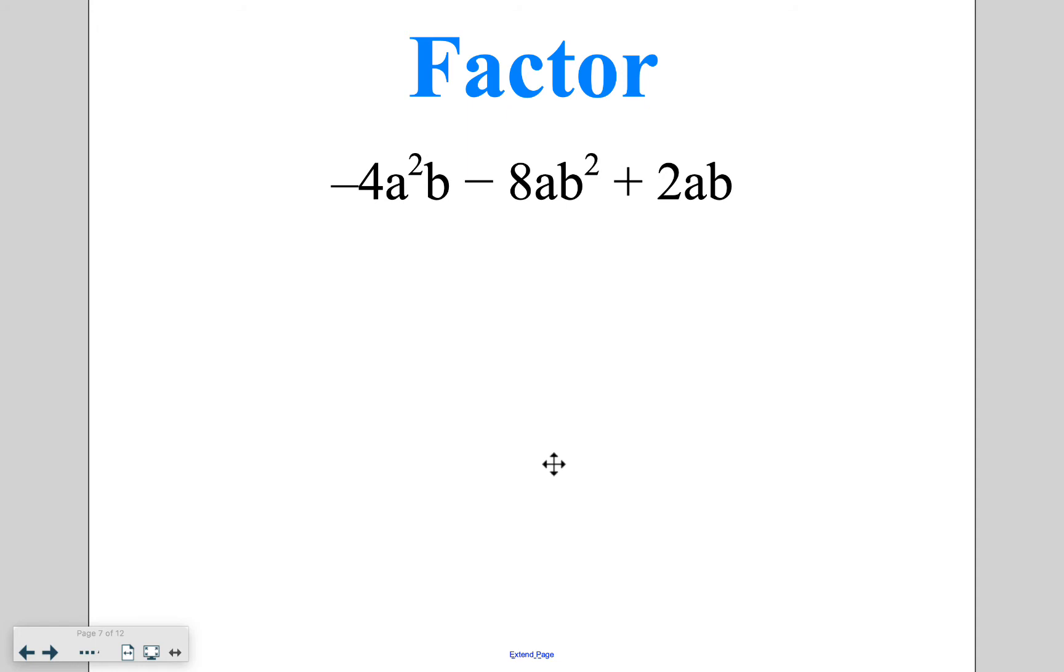When we are looking at these, just another example here. I've got 1 and 4, 2 and 2. And then I've got 1 and 8, 2 and 4. And then I've got 1 and 2. Listing out our variables, I've got 2 A's and a B, an A and 2 B's, and 1 of each A and B.